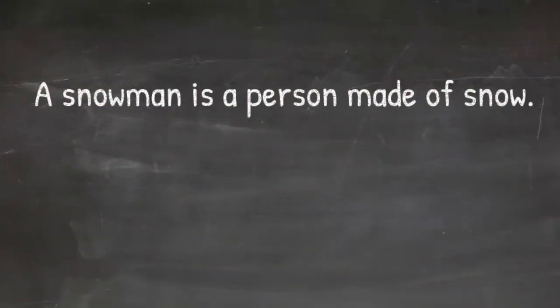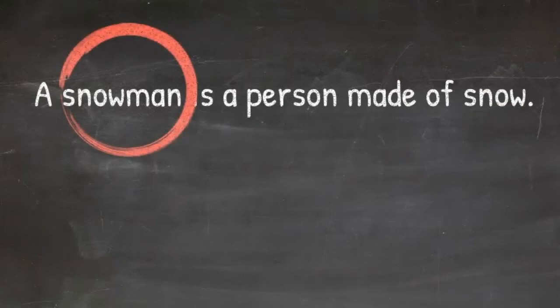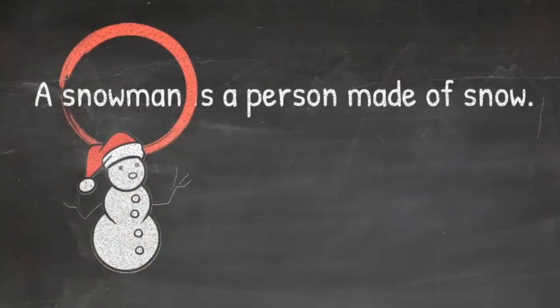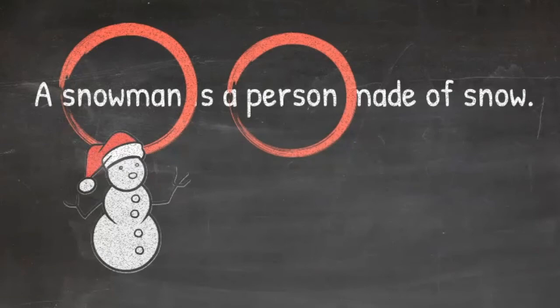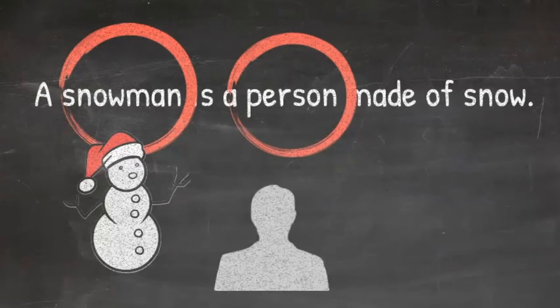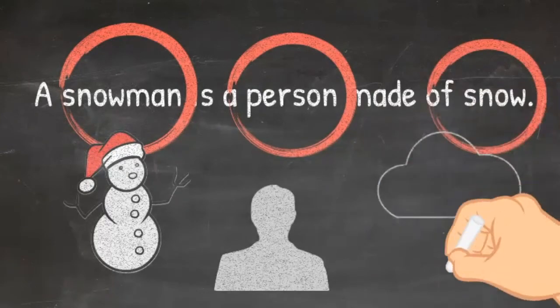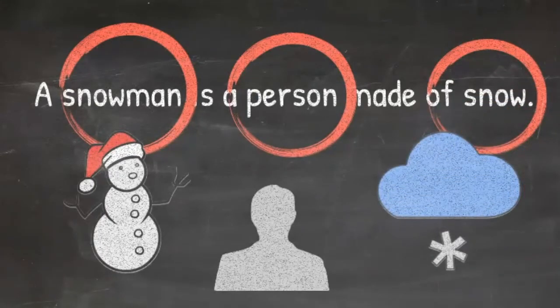A snowman is a person made of snow. Snowman is a noun, person is a noun, snow is a noun. Is snowman person or thing, Georgie? I don't know, I think it's a thing.